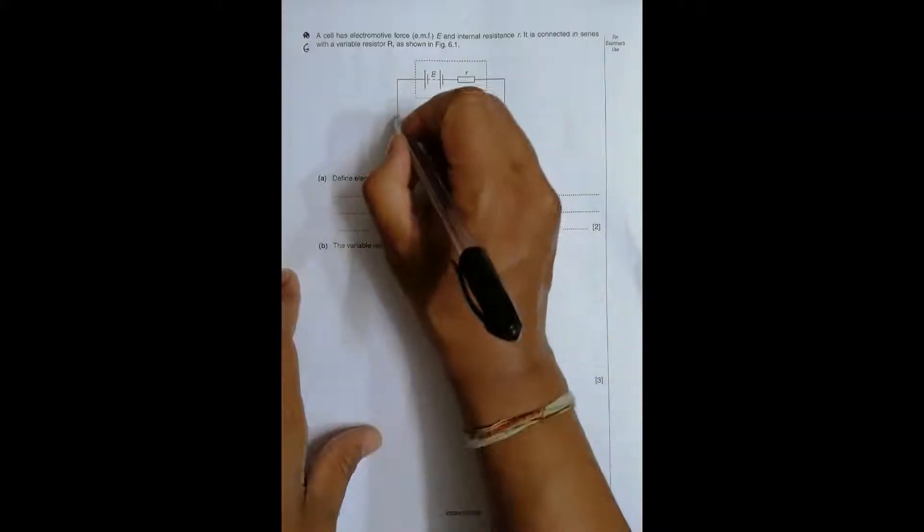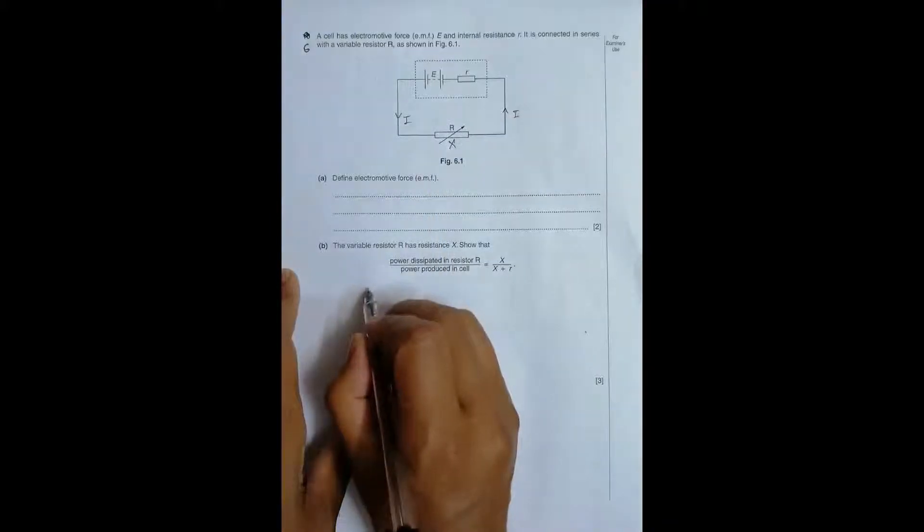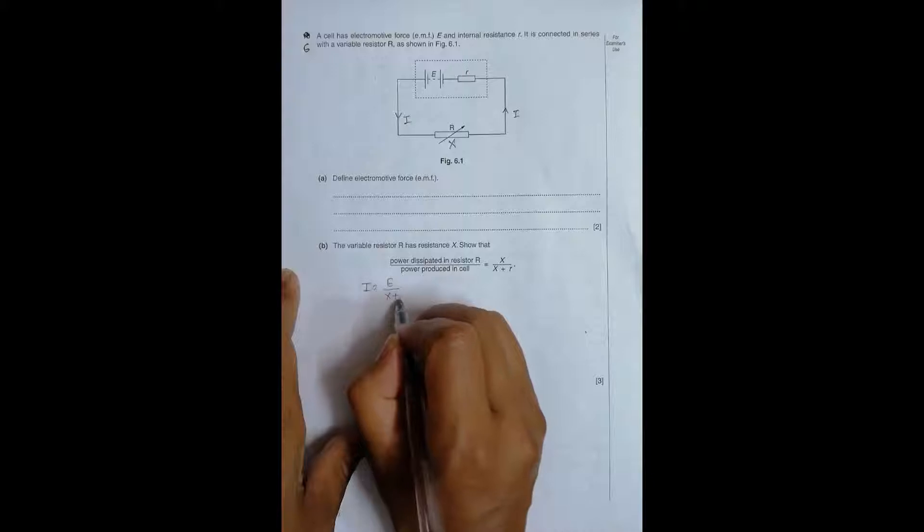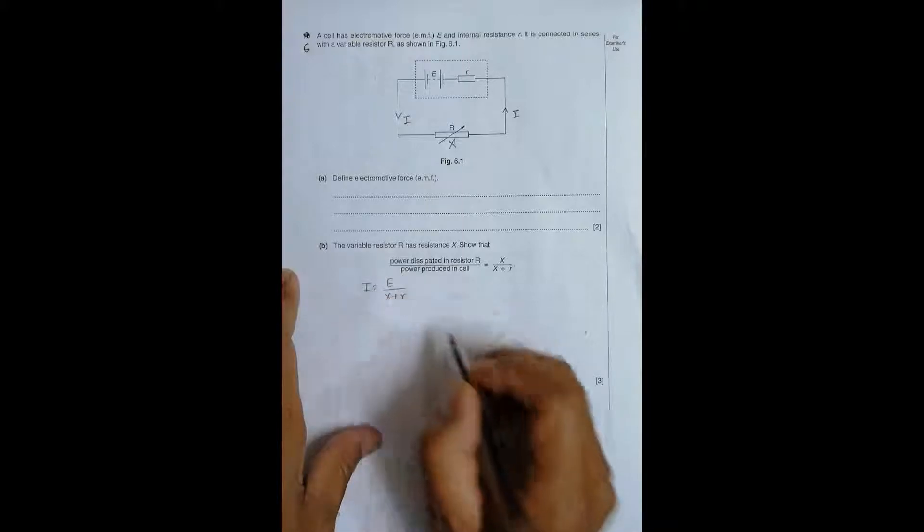First we have to calculate the current here. So the value of current should be I equals total EMF is E and the total resistance is X plus R.